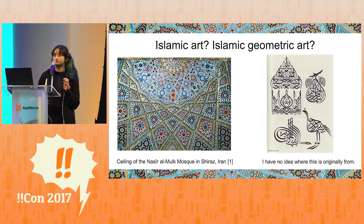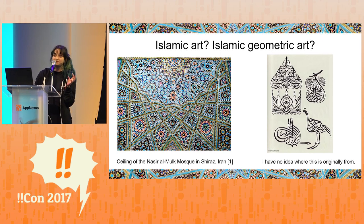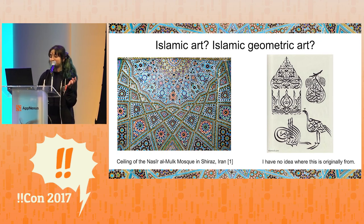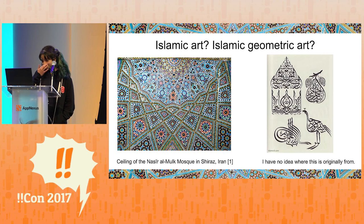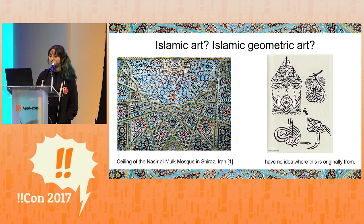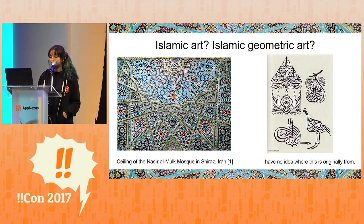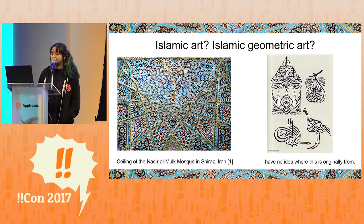One interesting loophole that calligraphers came up with is that they'd shape their calligraphy in the shape of animals, so that they could argue they weren't actually representing animals, but rather just some letters. Because the construction techniques for these very complex geometric pieces were considered trade secrets, the knowledge of how to make them was for the most part never made public. Thus, we don't know how a lot of tilings and patterns from that era were constructed.